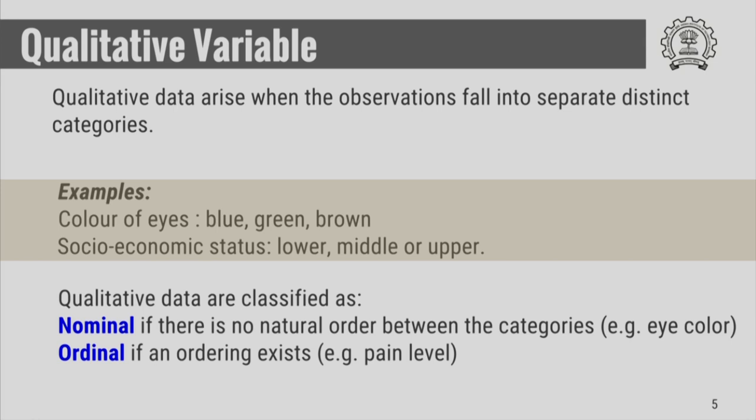color of eyes: blue, green, or brown. Similarly, socio-economic status is another example of qualitative data because socio-economic status can be lower, middle, or upper class. And in general, you cannot assign numbers to it.